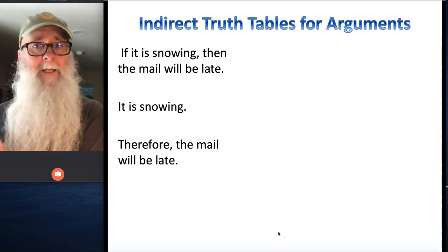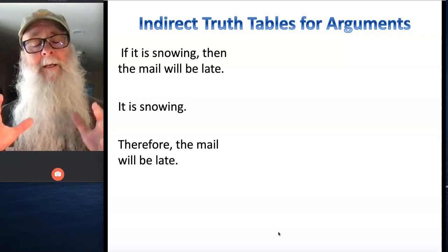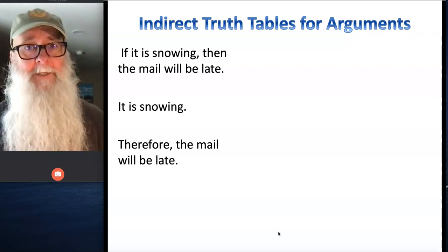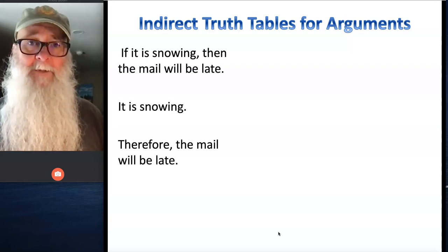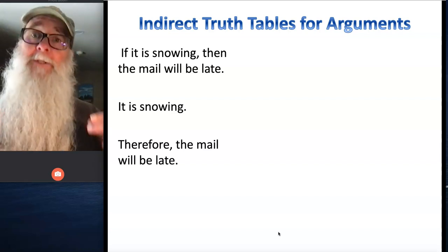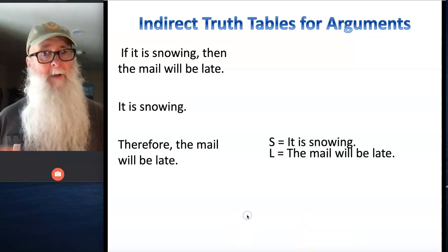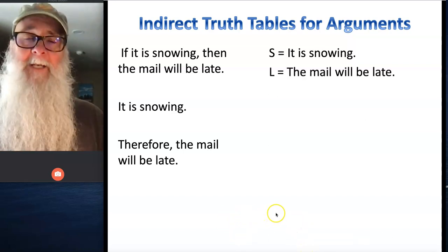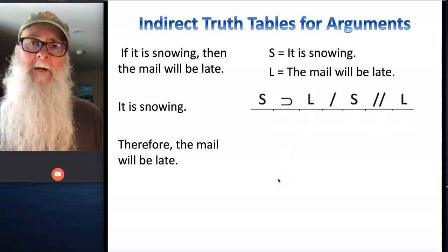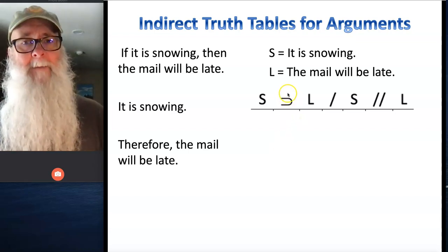Okay, like the argument we analyzed in the previous lecture, this argument was one that we evaluated in the last thought primer by creating an ordinary truth table using L equals 2 to the N. We're going to evaluate this argument again here using an indirect truth table. And we're going to do that by identifying the simple statements that comprise the argument, assigning them letters, and then representing the argument symbolically on a single line using those letters and the appropriate operators.